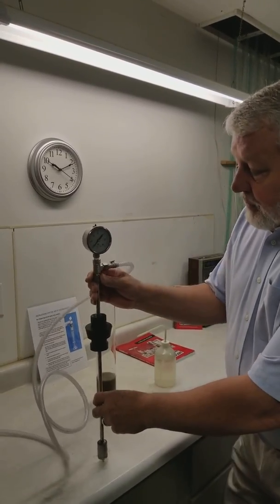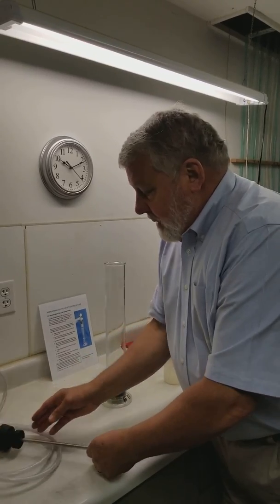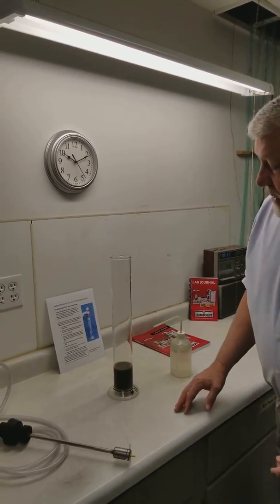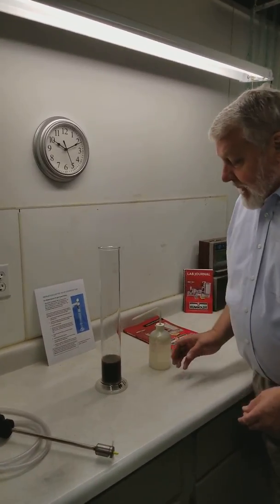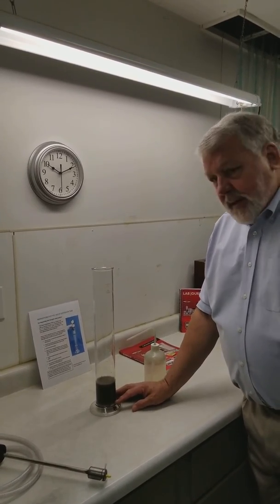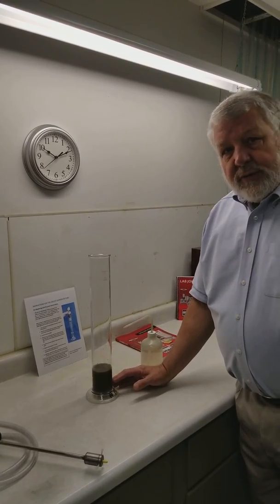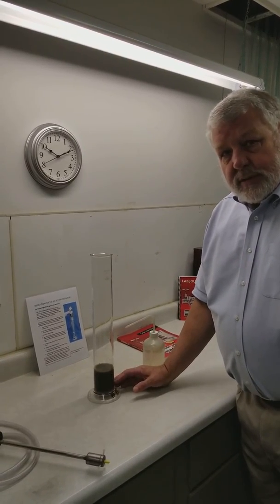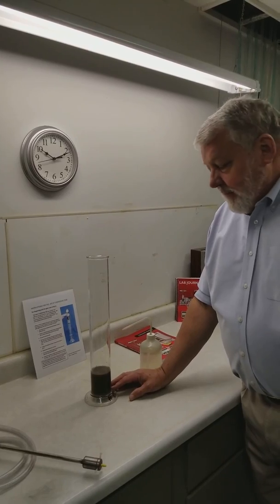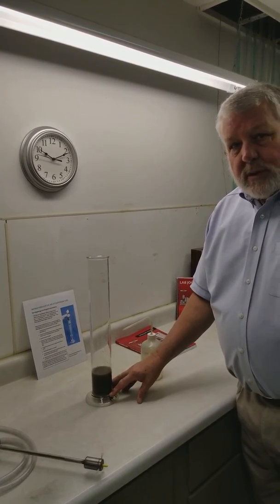In performing the preparation we need to weigh out about 50 grams of air dried soil and at that time also take a small sample of the same soil and perform a moisture content test on that soil so that you can correct the 50 gram weight in the sedimentation cylinder to the oven dry weight that you're going to use in your calculations when you perform the hydrometer test.